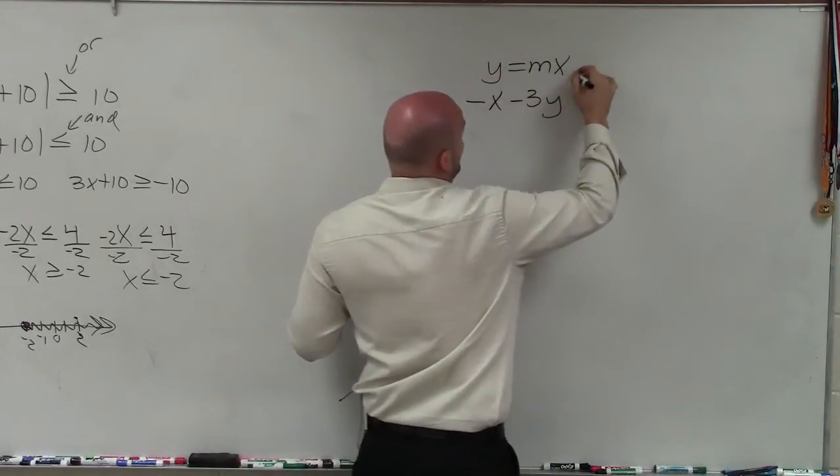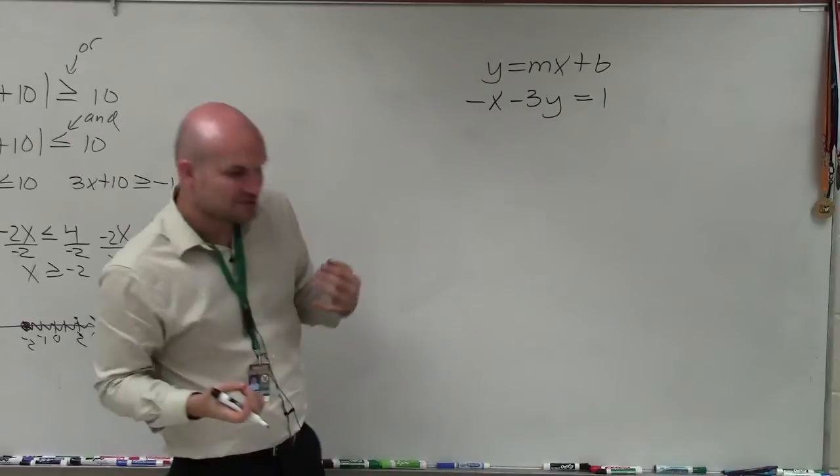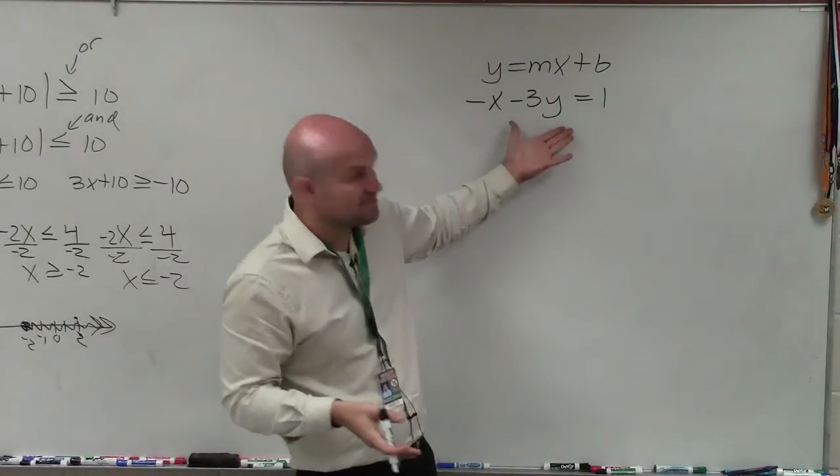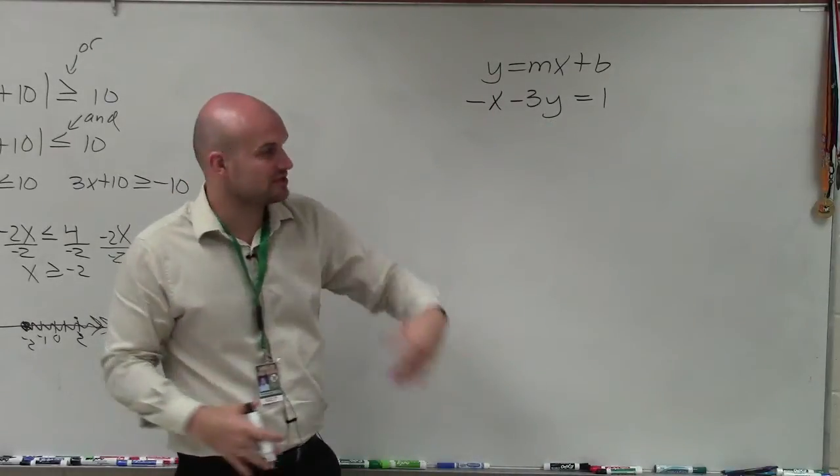Slope-intercept form is y equals mx plus b. To graph using slope-intercept form, we need to take it from standard form and rewrite it into slope-intercept form.